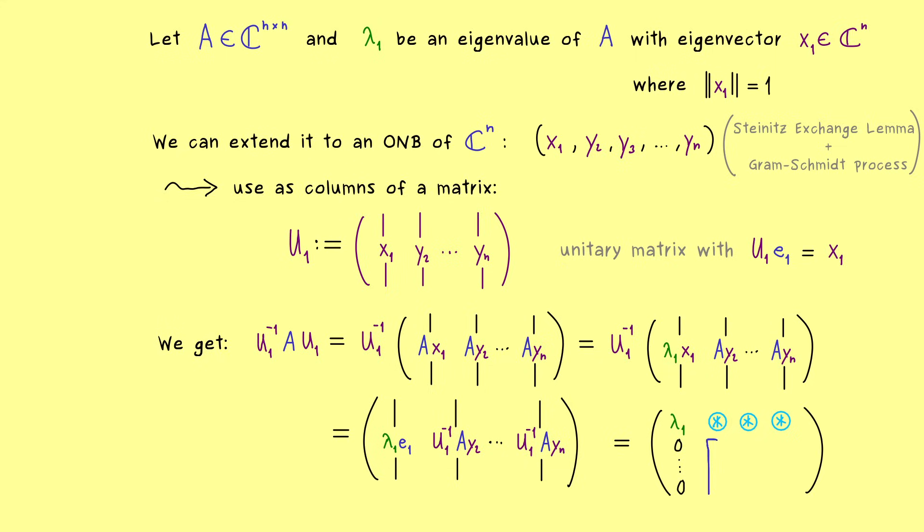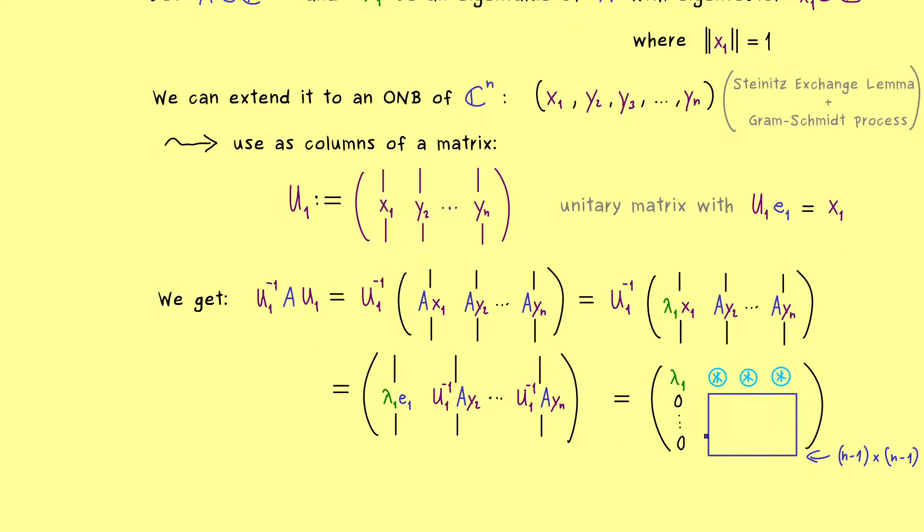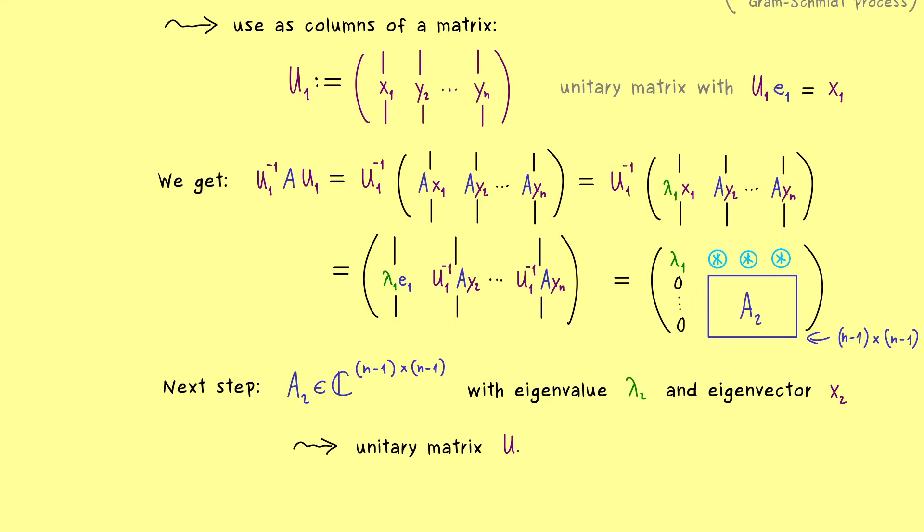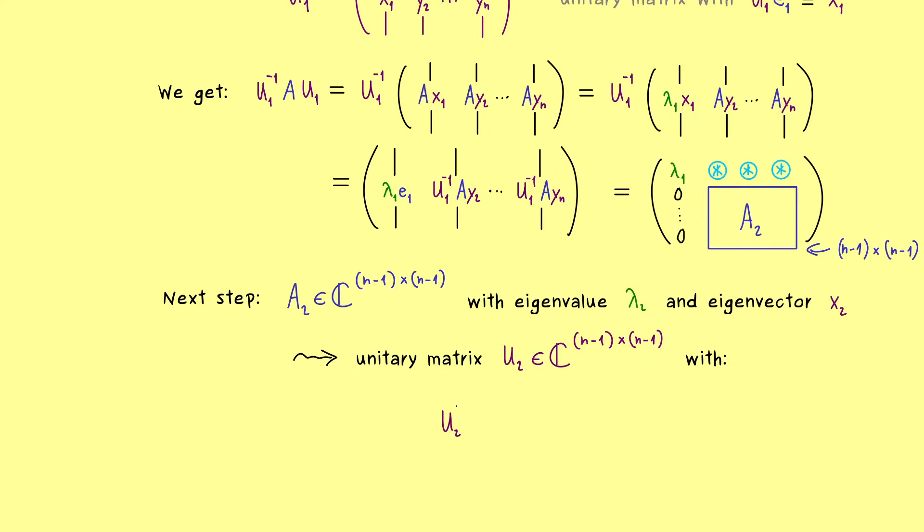However, what we also find then is a square matrix in this corner. And the size of this new matrix is reduced by 1. So we have (n-1) times (n-1). Therefore it makes sense to call this matrix A_2 and continue all the steps with this reduced matrix. So there you see the induction step. Now we have a new square matrix, which is smaller than the original one. And moreover we can still find an eigenvalue, which we can call lambda_2. So again we use a normalized eigenvector x_2 and repeat all the steps from before. So this brings us to a unitary matrix U_2 and a decomposition for A_2. This means we can also write U_2 inverse times A_2 times U_2.